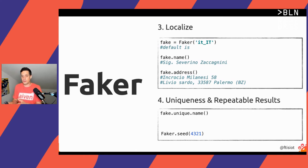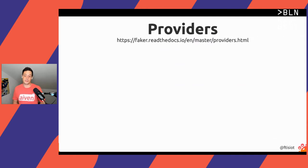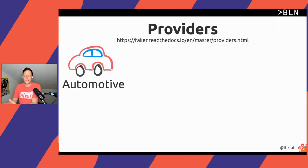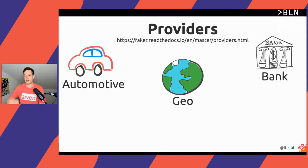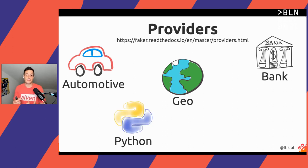So far we saw just names and addresses, which is a limited example. However, Faker has a huge list of pre-built providers — you can find the URL to browse them. For example, we can create automotive data, geographical data like country states and zip codes, banking transactions, and we can even create fake Python code. Of course, we cannot expect Faker to cover all possible use cases.